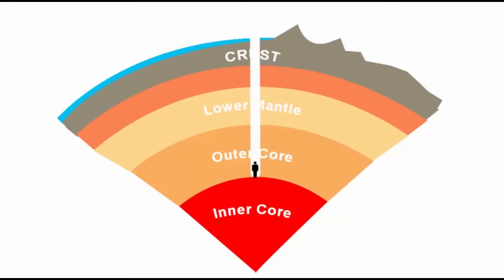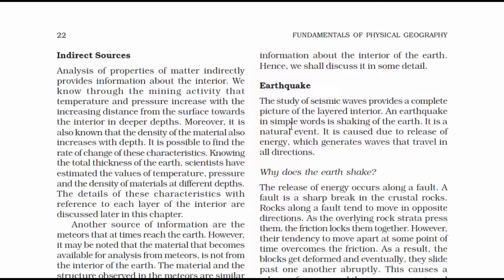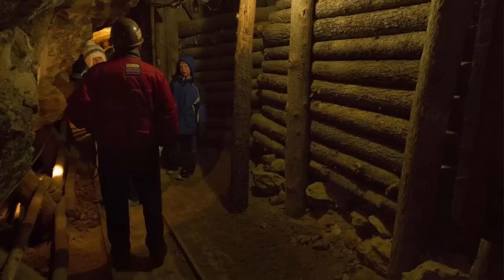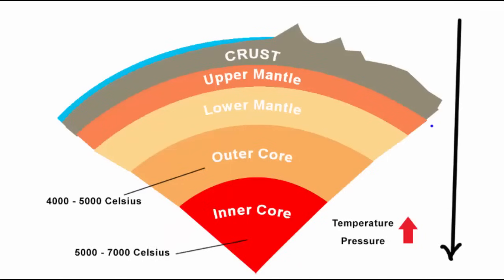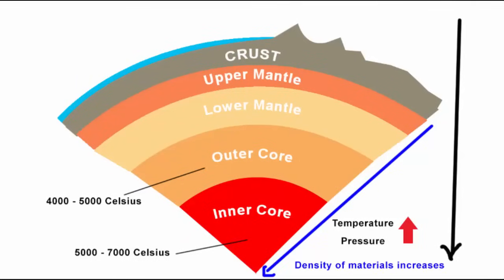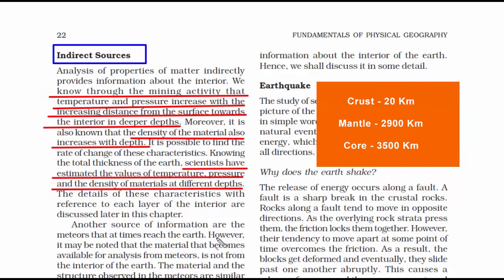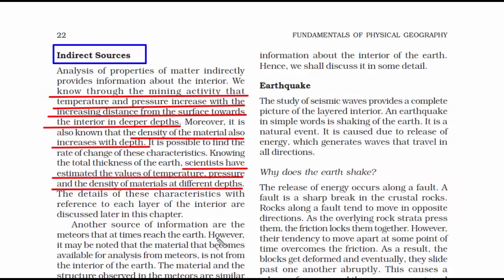It is far better than going in person inside the earth, which can otherwise be fatal. Now, temperature and pressure increase as we go from the surface towards the interior in deeper depths — this was observed through mining activities. The density of material also increases with depth. Scientists have developed estimations of the temperature, pressure, and density of each layer with respect to the total thickness of the earth. These are approximate values, and a lot of mathematical concepts come into play — that's why they are referred to as indirect sources.